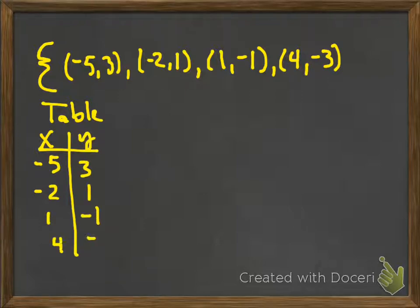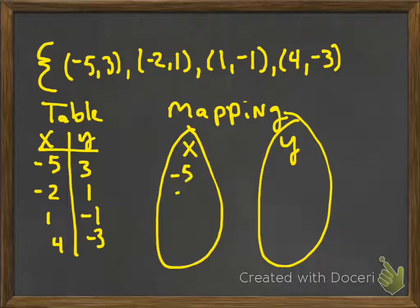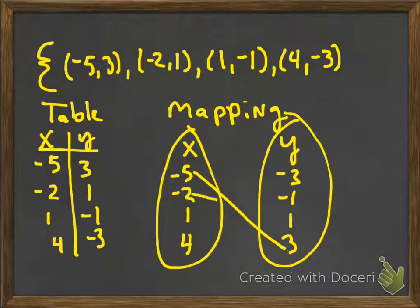Now, there's some different ways we can represent this. One way is with a table. And so here's me presenting the table, x, then y. And right now I'm just saying y because I don't know whether or not this is a function. If I knew it was a function, I could say it's f of x. Then we can also do a mapping. A mapping is just like putting all the x's in one bubble, all the y's in another bubble, and then drawing points to connect the ones that matched up.